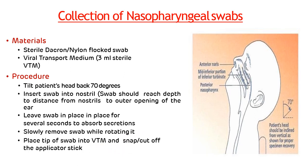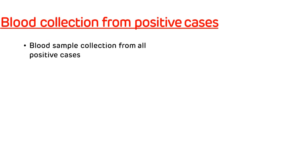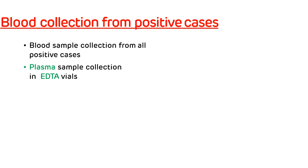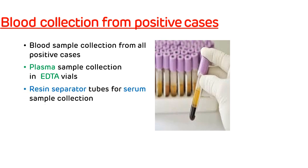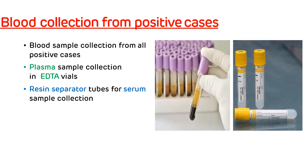For blood collection from positive cases, blood samples must be collected from all positive cases. Blood should be collected in EDTA vials for plasma sample collection, and it can also be collected in resin-separated tubes for serum sample collection.